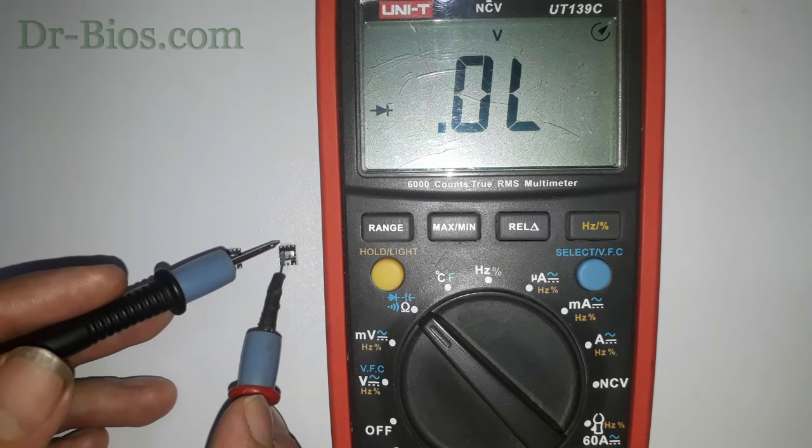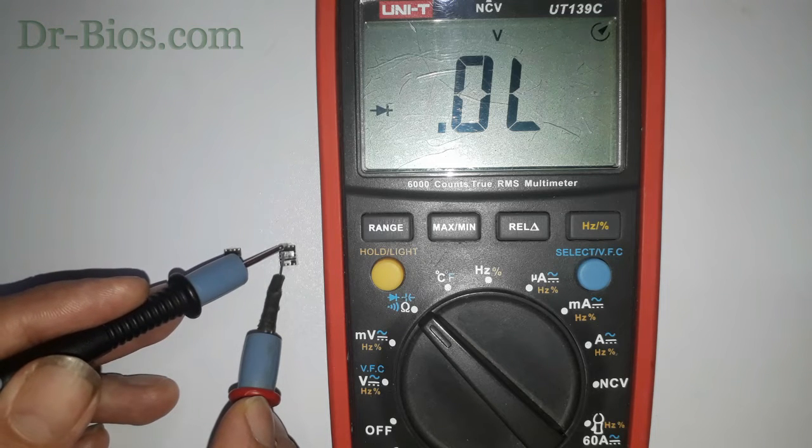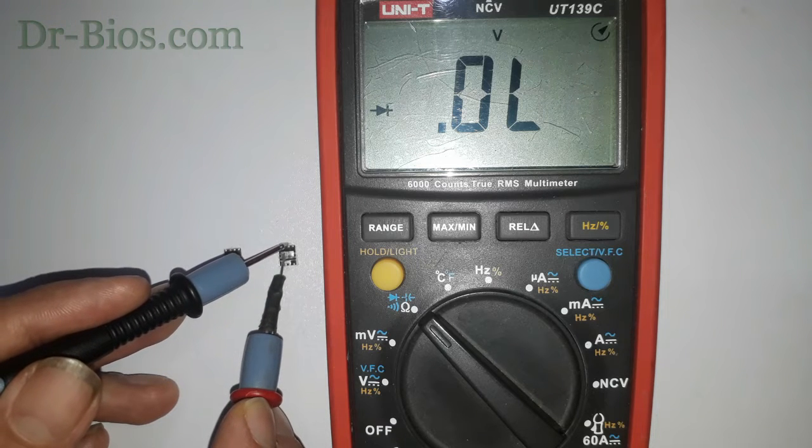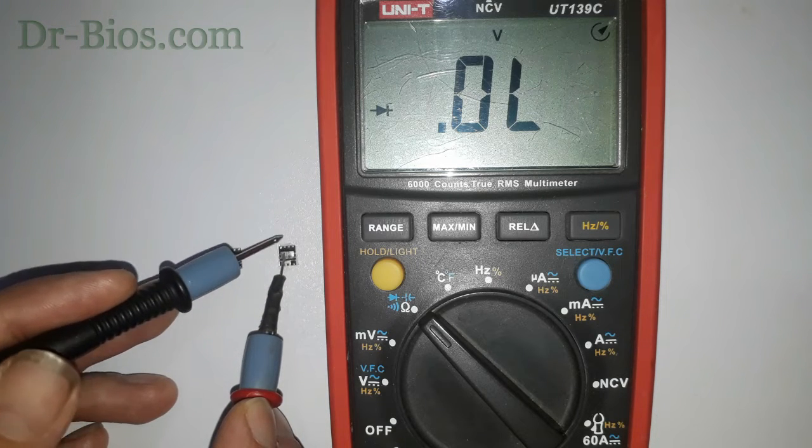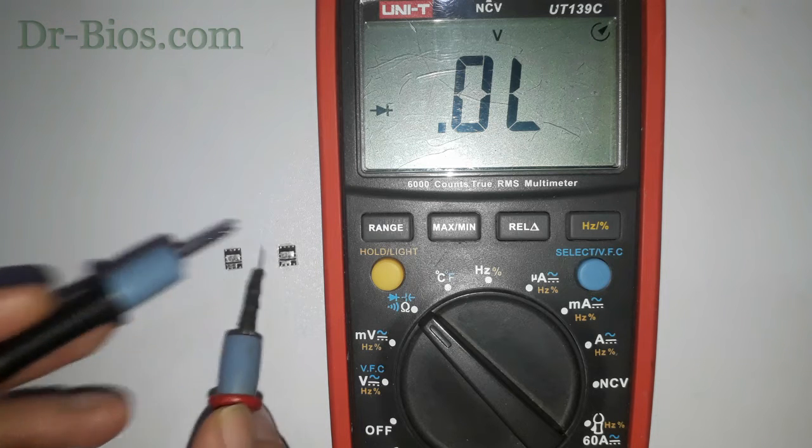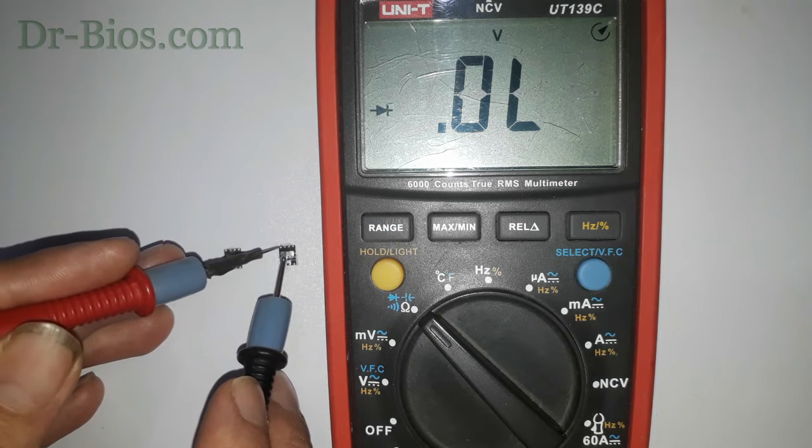Now I check low MOSFET in here. Red probe is on drain pin of low MOSFET and black probe is on source pin. It's not connected and no number appears. Let me reverse the probes. Number value needs to appear.